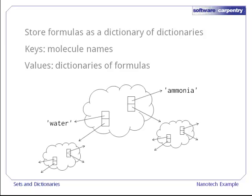Here for example, we have an outer dictionary that maps the word water to a dictionary storing the number of oxygen and hydrogen atoms in a single water molecule, and the word ammonia to a dictionary storing the number of nitrogen and hydrogen atoms in a single ammonia molecule.